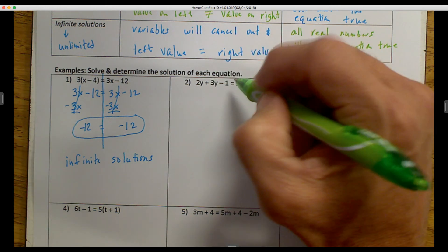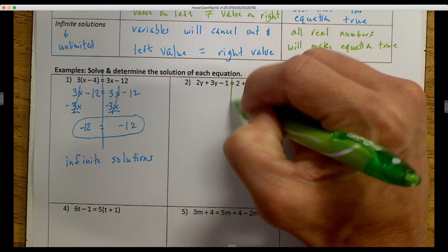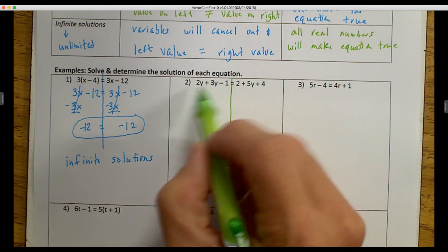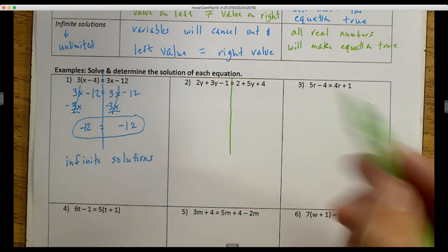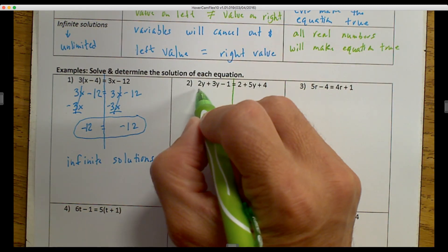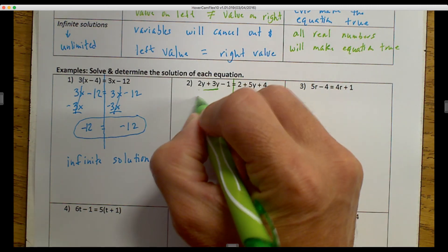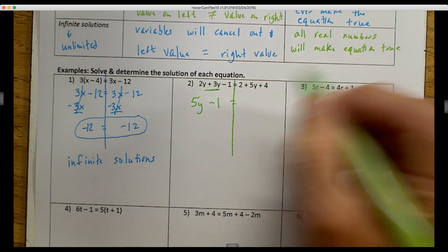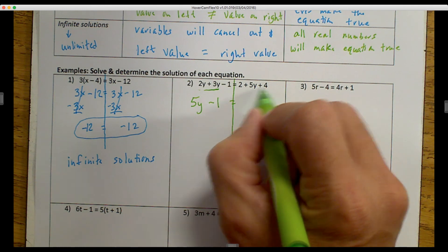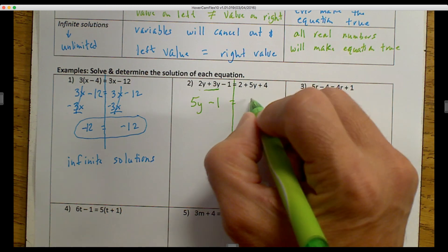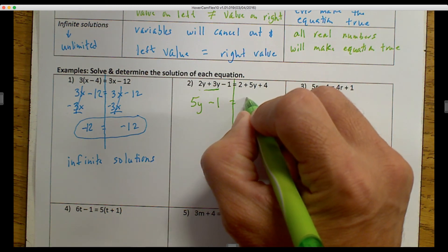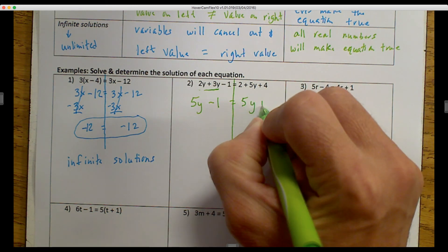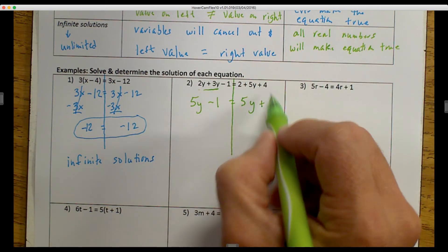The second example, I'm going to again identify the middle of my equation. Is there any distributing? No, there's no distributing. However, I noticed that I have like terms over here. I have a 2y and a 3y. So 2y plus 3y is 5y, and then minus 1. And that's equal to, I look over here, I have three different terms. I noticed that I have a 2 and a 4. So those are like terms. And I'm going to put those together, and I'm going to go 5y plus 6, because 2 plus 4 is 6.